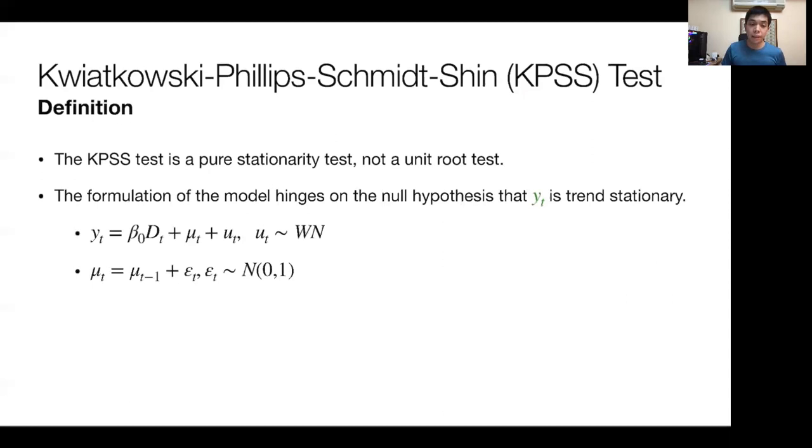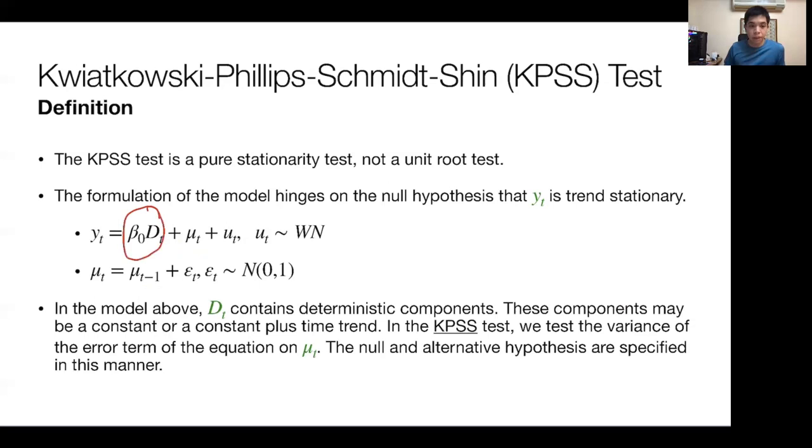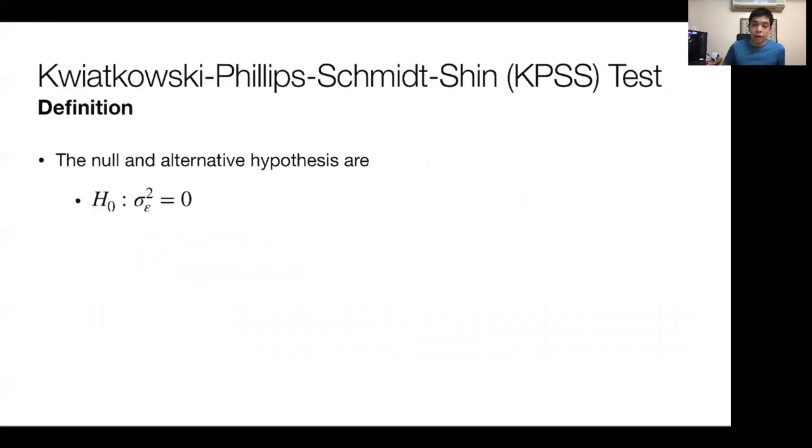You have YT equals some beta times dt plus an intercept plus the error term. We do assume here that the error term is a white noise error process, but the intercept, this mu t term here, can follow this sort of process where et is distributed in a standard normal fashion. In the model above, the main modification is this dt, which contains deterministic components. These components may be a constant or a constant plus a time trend. In the KPSS test, we test the variance of the error term of this equation, which is mu t.